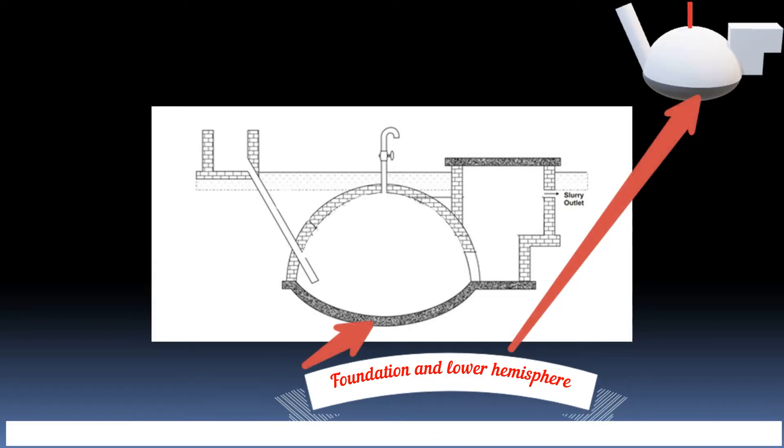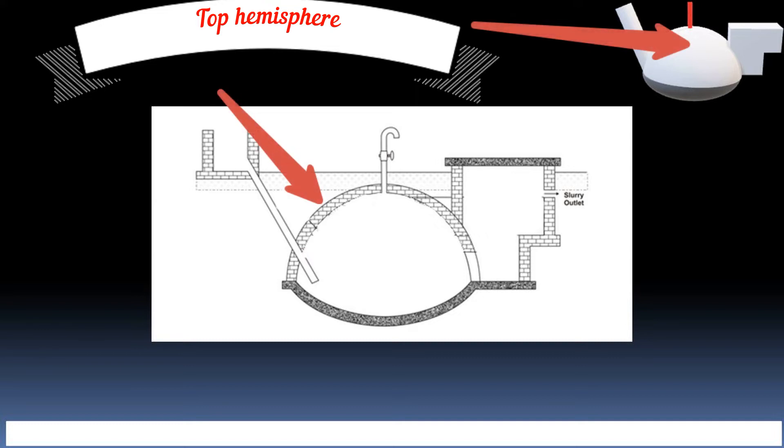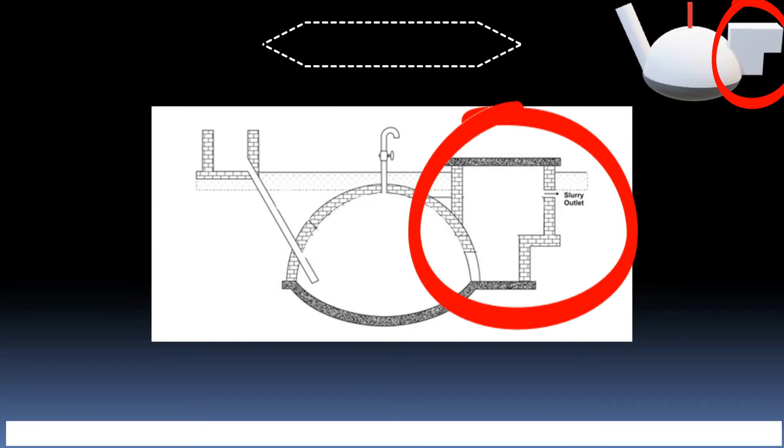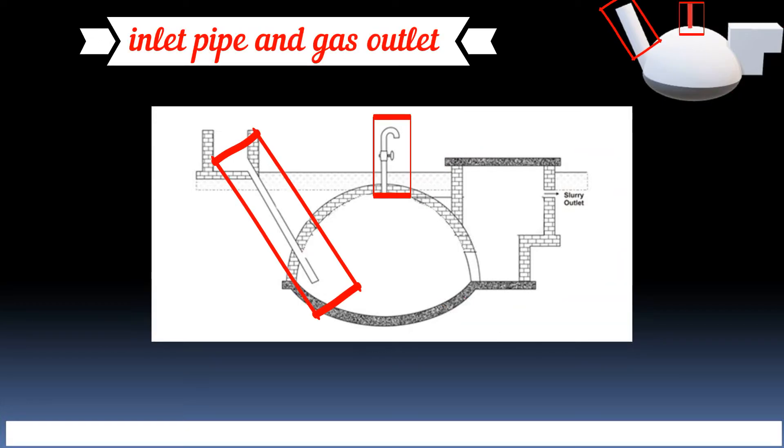The foundation and lower hemisphere are shown in black in 2D and 3D models. You can also identify top hemisphere in these two diagrams. Match shape of outlet in these diagrams also. The inlet pipe and gas pipeline are easy to locate in the diagram.